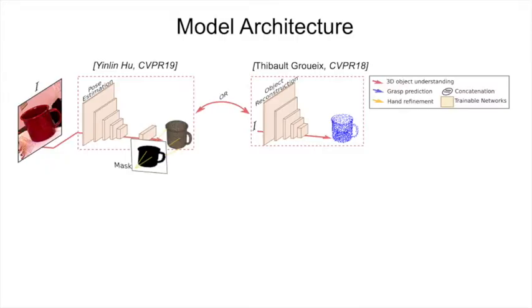We then design a generative model that predicts a distribution of possible grasps for each object from a single RGB frame. We do this by first reconstructing the 3D layout of the scene for which we use state-of-the-art pose estimation or object reconstruction.